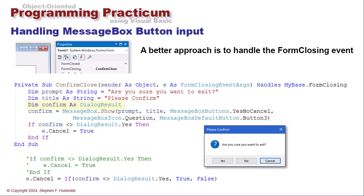Instead of dr, I use confirm in this case for my variable name as dialogue results. So confirm equals message box dot show. I'm going to show the prompt, the title, yes, no, cancel, a question mark icon, and make again the cancel button, button three, the default value.